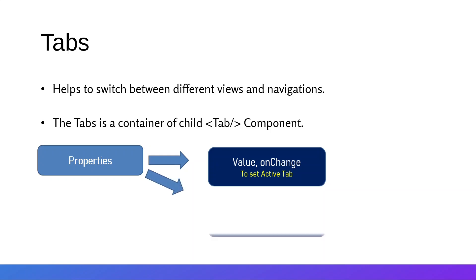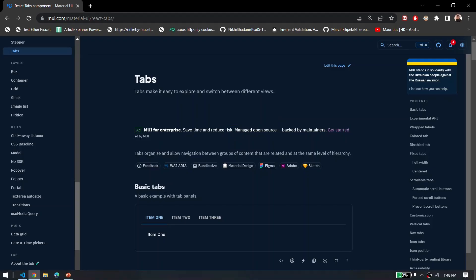There are additional properties as well, like indicatorColor, which controls how the active tab is indicated. You can change it to primary, secondary, error, or other colors. There is also a textColor property, which can be set to primary, secondary, inherit, or any other color. These are the main properties of Tabs in Material UI.